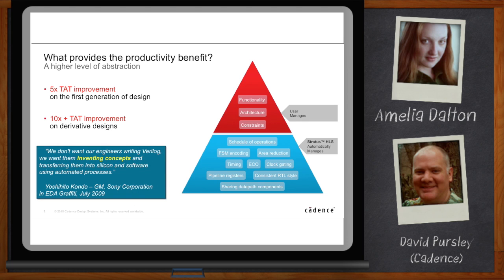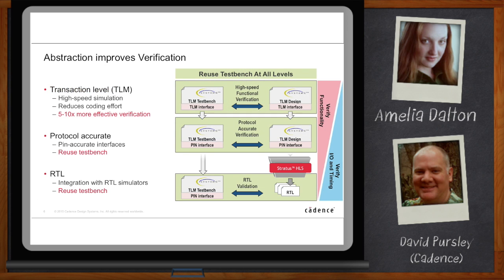You generally get about a 5x productivity improvement the first time, and then even higher by reusing that IP. Another thing the higher level of abstraction gives you is improvements in your verification flow. High-level synthesis lets you work at the transaction level, do your verification there, and then automatically generate the hardware from that. The verification used at the high level is directly applicable to your RTL implementation, because it was directly created from that high-level description.